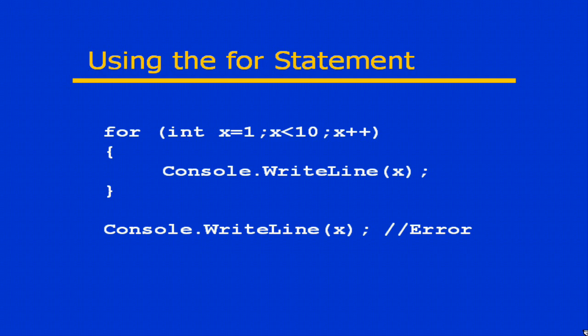If I attempted to do a Console.WriteLine outside of that for block using the same x variable, that would result in an error because the variable x only has scope for that block.